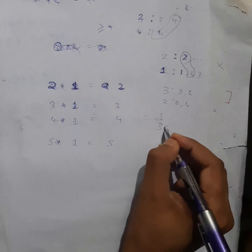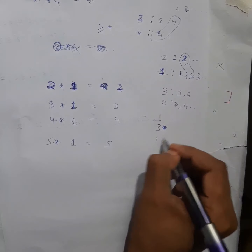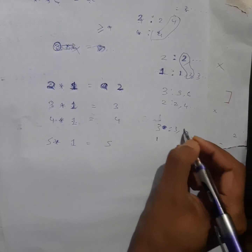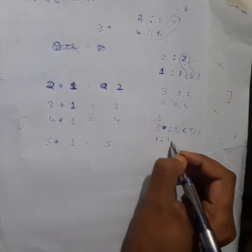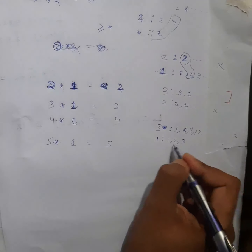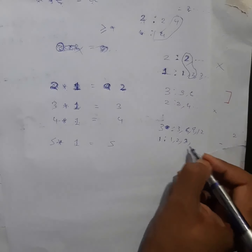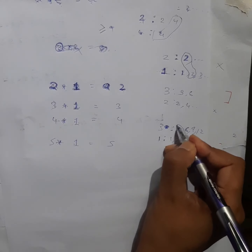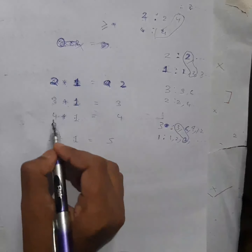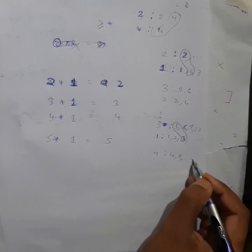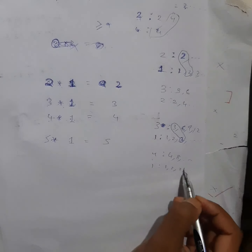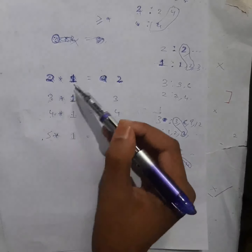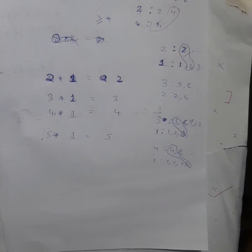So 3★1: LCM of 3 and 1. Multiples of 3: 3, 6, 9, 12. Multiples of 1: 1, 2, 3, 4, 5 — all numbers. The lowest common multiple between 3 and 1 is 3. Also, 4★1: LCM of 4 and 1. Multiples of 4: 4, 8, 12. Multiples of 1 include all numbers including 4. Lowest common multiple is 4. So when I do operation with 1, I always get back that element. Therefore 1 is the identity of this operation.